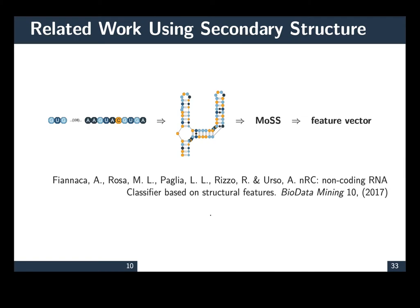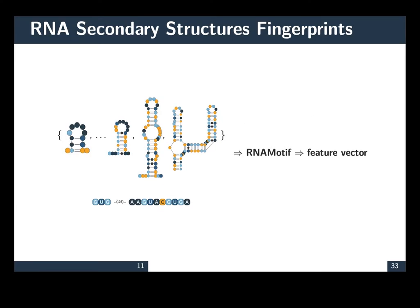Although there is no work where secondary structure information has been used for predicting susceptible host, secondary structure information has been used for other problems, including the classification of non-coding RNAs. In the work of Fianaca, the input sequence is fed to a secondary structure prediction tool to produce the secondary structure. An algorithm called MOS is applied on the secondary structure to extract features.